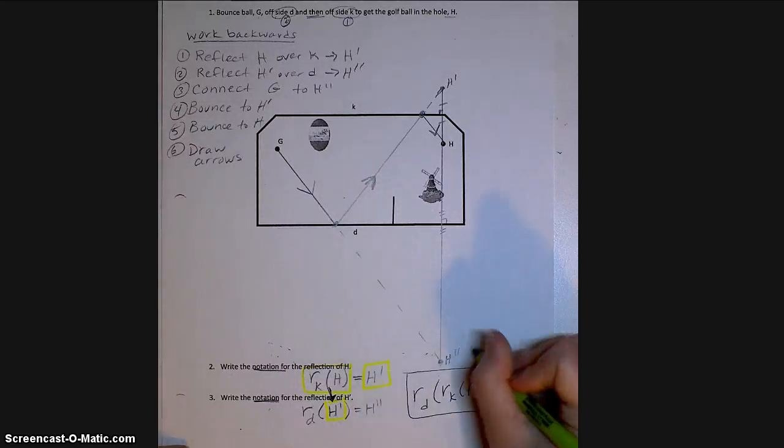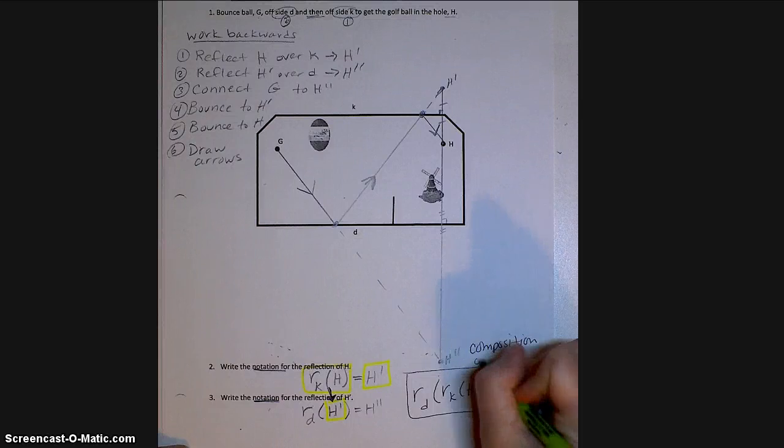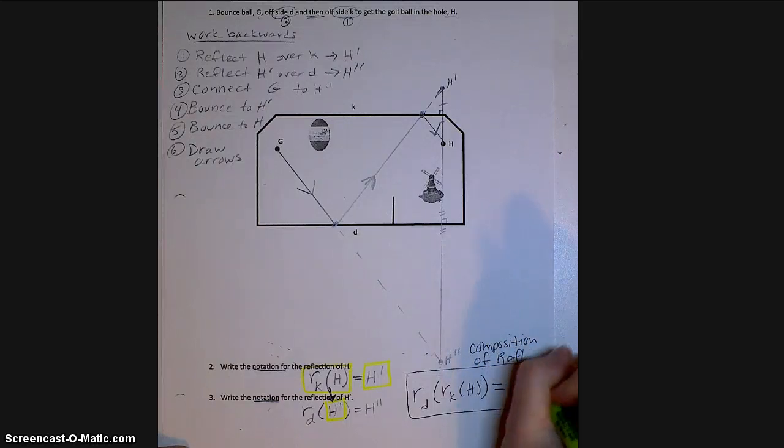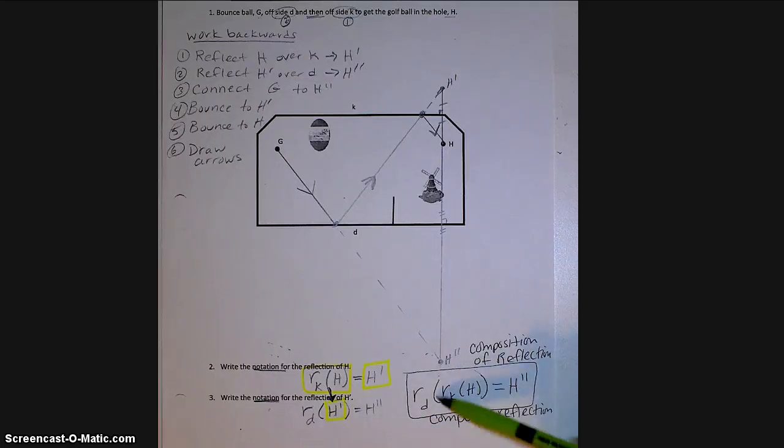This is what we call a composition of reflections or composite reflection. Basically, this means a double reflection or a reflection of another reflection. And that makes sense because that's what we do here. So first, you always start on the inside parentheses, just like PEMDAS.